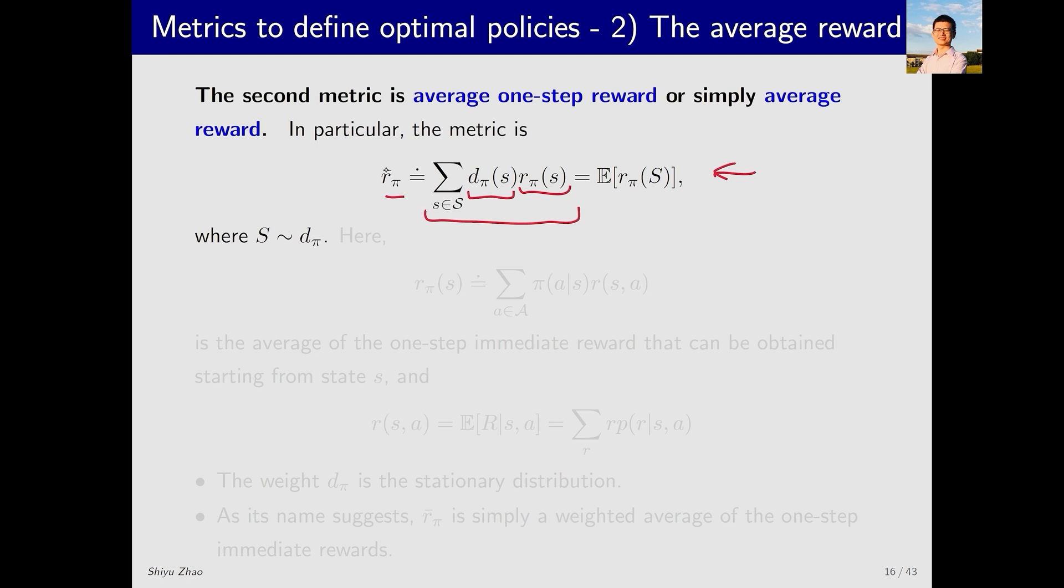The bar on top of r_π indicates that this is an average. Since d_π(s) is a probability distribution, we can write this sum as an expectation form. Now, what exactly is r_π(s)? The equation for r_π(s) is as follows. It represents the average immediate reward I can get when in state s.